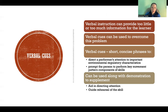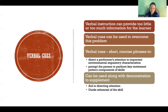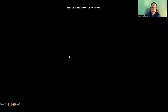Verbal cues can also be used alongside demonstration in the practice environment. While demonstrating, you can point out what you're doing — 'look at my elbow,' 'look at my knee,' 'I'm paying attention to this thing.' You can then use those same cues when the learner is executing the action to help direct their attention to the right things.